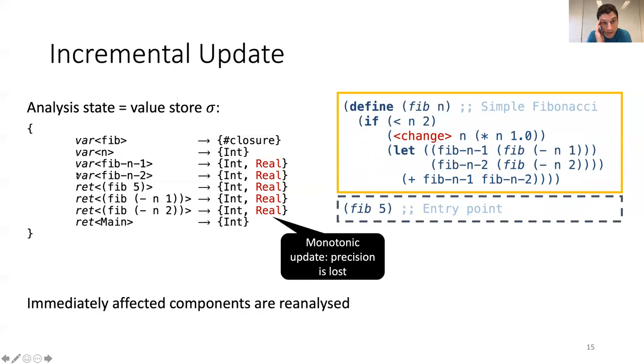But, as updates are monotonic, the analysis cannot discard outdated results. And for this, a bit of precision is lost, since the analysis now thinks these can be both integers and real, while in the new program, this can only be real.